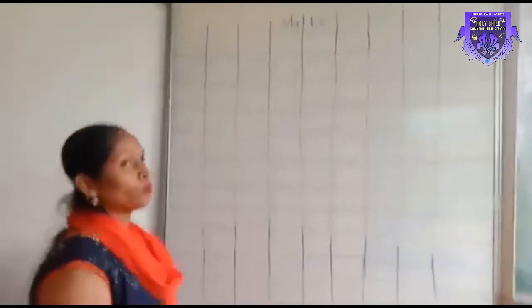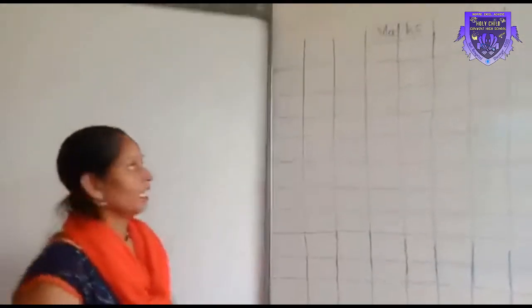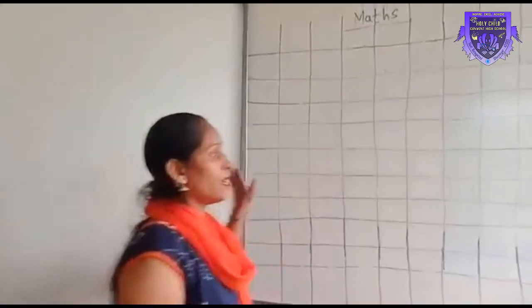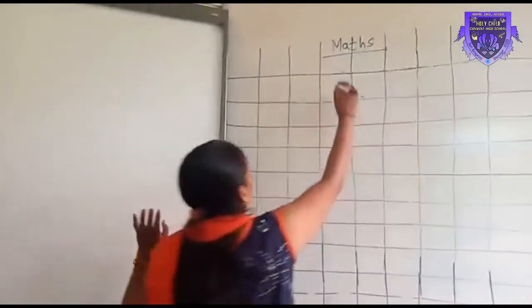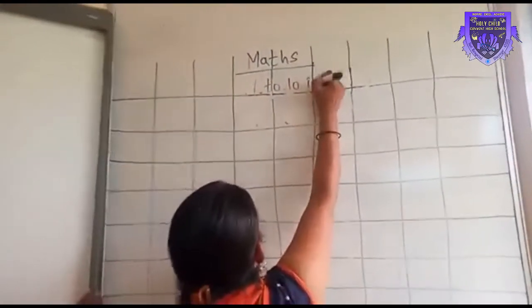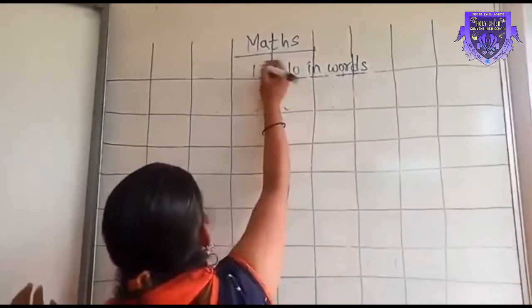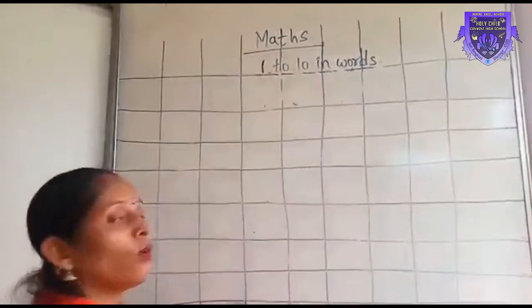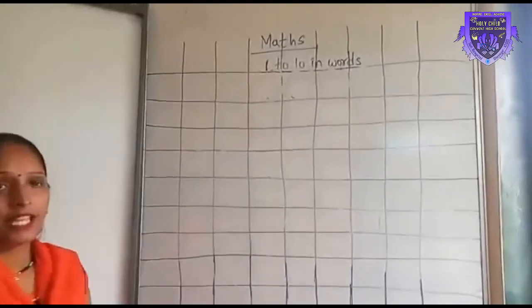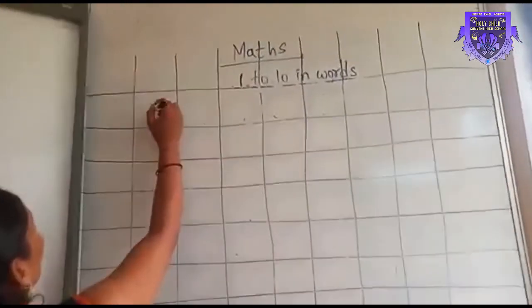Thank you. So students, now we have already completed our 1 to 50 figures. Now turn your page. In the same book, you have to write 1 to 10 in words. In words you have to write letters, and in figures you have to write only numbers. So take your pencil.